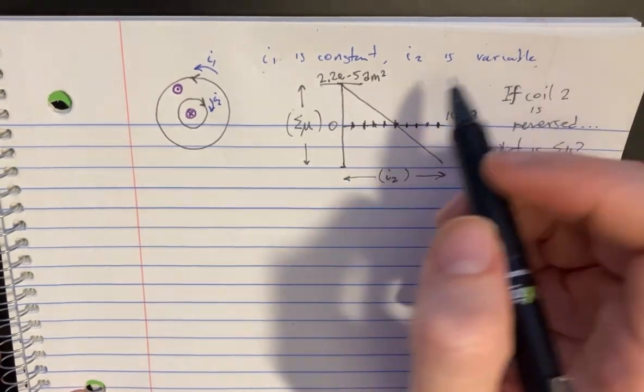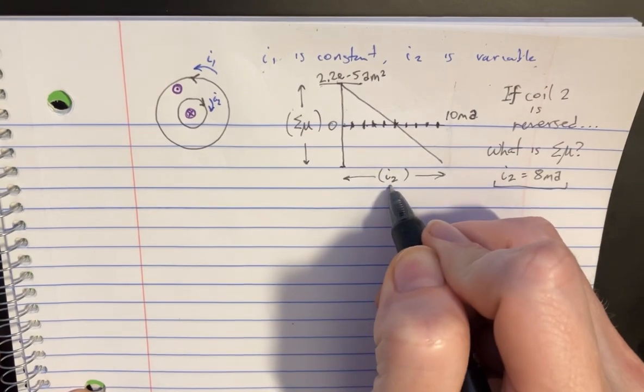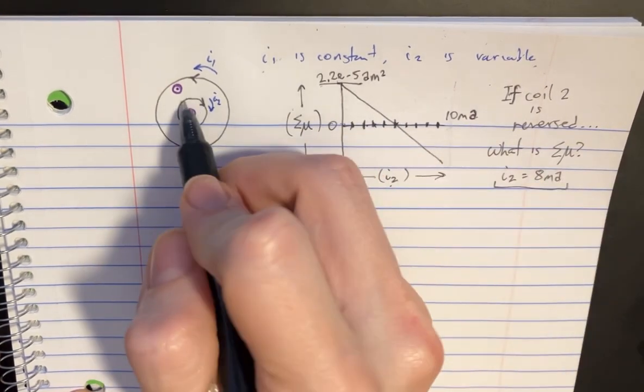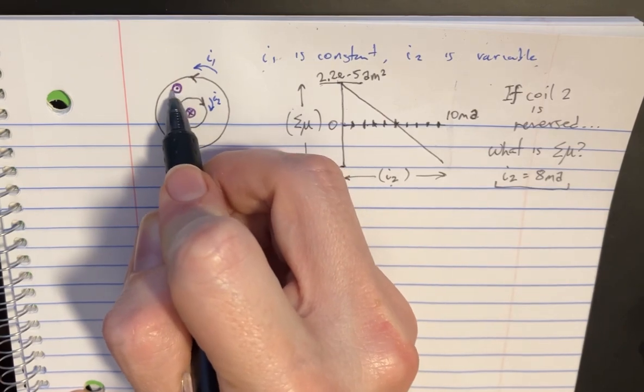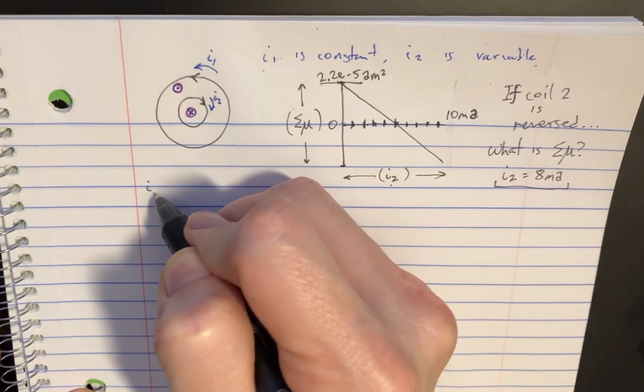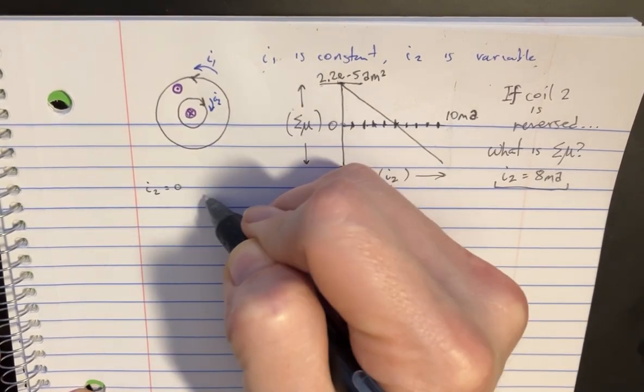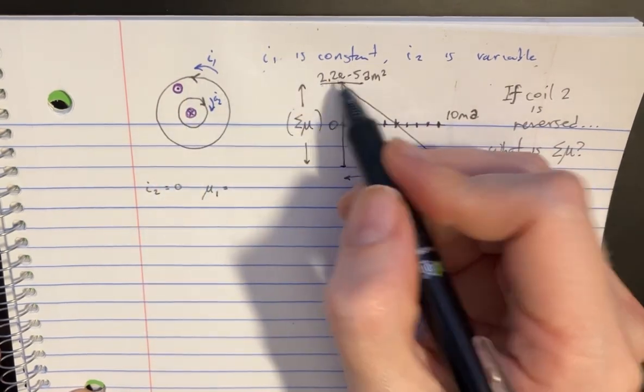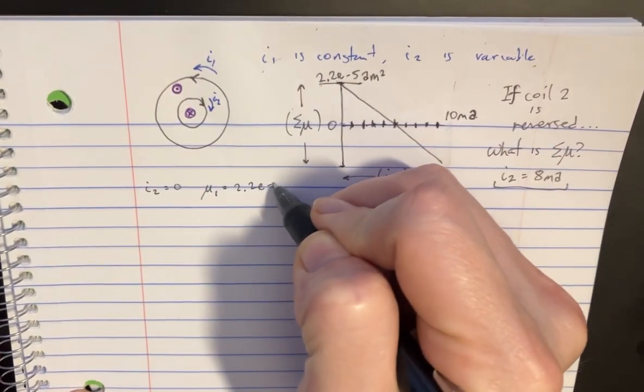It's a little bit confusing, but what's happening over here is that basically what it's saying is when I2, the current is equal to zero, that means that the magnetic moment here from I1 is going to be equal to this. So we can say that I2 is equal to zero, and at that moment, M1 is equal to 2.2 e to negative 5.